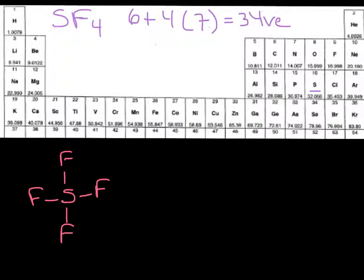And let's go ahead and distribute until we've used all 34. So 2, 4, 6, 8, 10, 12, 14, 16, 18, 20, 22, 24, 26, 28, 30, 32. Now we have not used up all of our valence electrons yet. We've only used 32, so that means we have one more pair to put on that central atom.